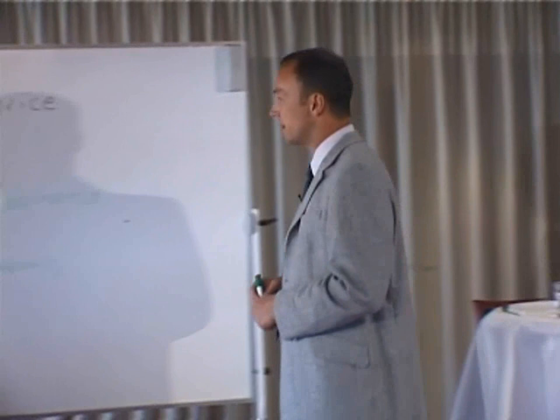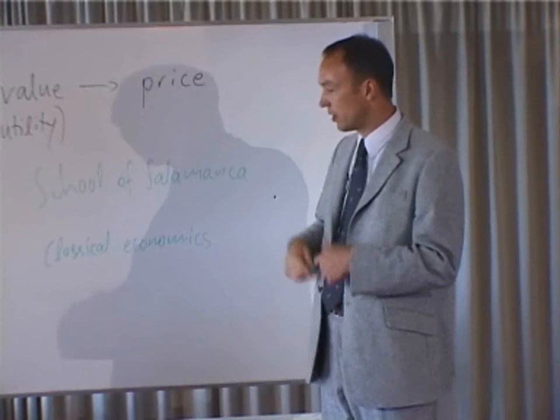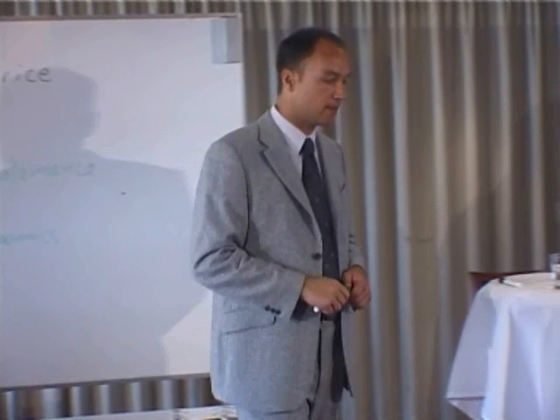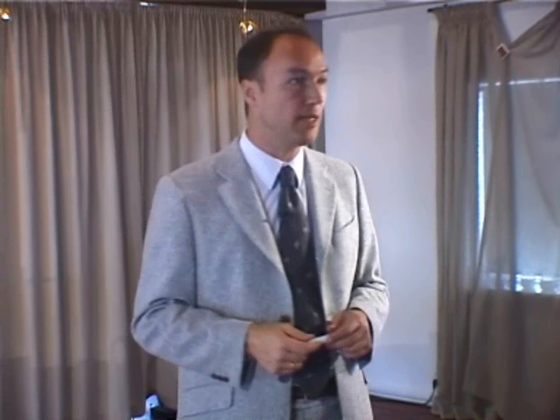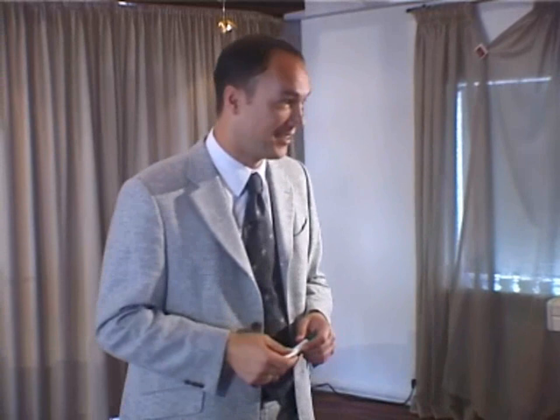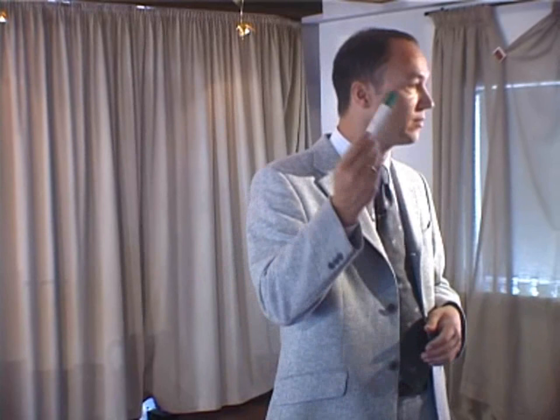The classical economists argued that market prices result from the cost of production. For example, the fact that a pen might sell for 10 coronas here in Denmark derives from the fact that it costs 10 coronas minus profit to produce the pen. It cannot be sold for less because the entrepreneur would make a loss, and it will not be sold for more because competition would drive the price down to that level.